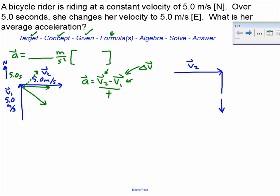If v1 is 5 meters per second north, then negative v1 is 5 meters per second south. So now we're adding negative v1 to v2, which is the same thing as subtracting v1 from v2, and the resultant to get that delta v is the resultant of those two vectors.